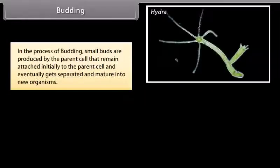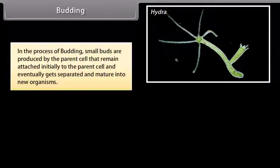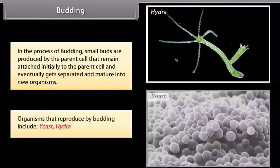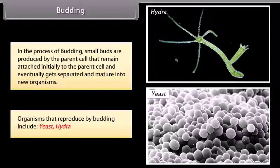In the process of budding, small buds are produced by the parent cell that remain attached initially to the parent cell and eventually get separated and mature into new organisms. Organisms that reproduce by budding include yeast and hydra. The following diagram shows the bud developing on parent hydra.